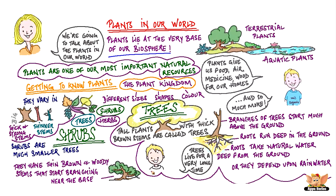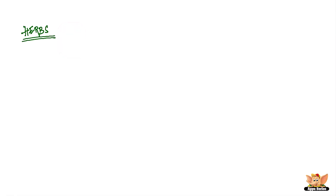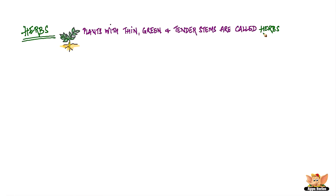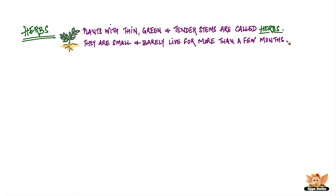Shrubs are much smaller than trees. They have thin, brown, and woody stems that start branching from near the base. Most shrubs live only for a few years. Plants with thin, green, and tender stems are called herbs. They are small and barely live for more than a few months.